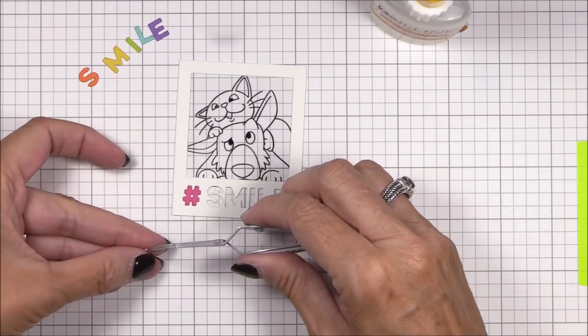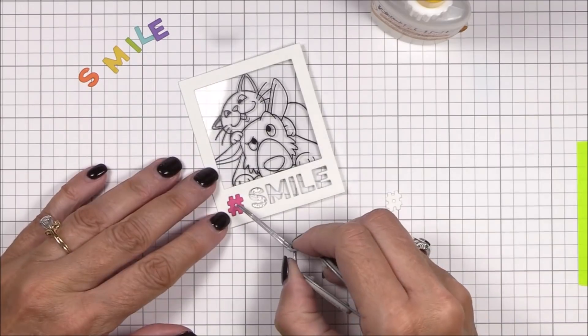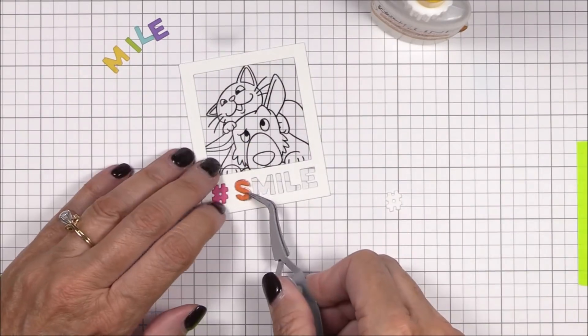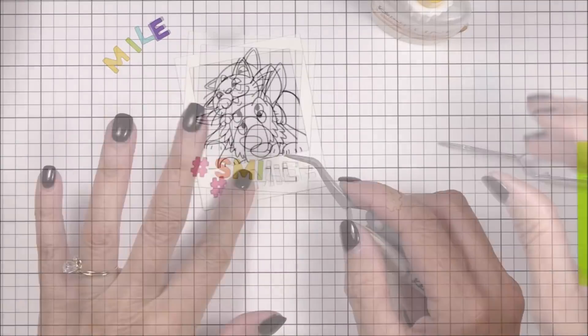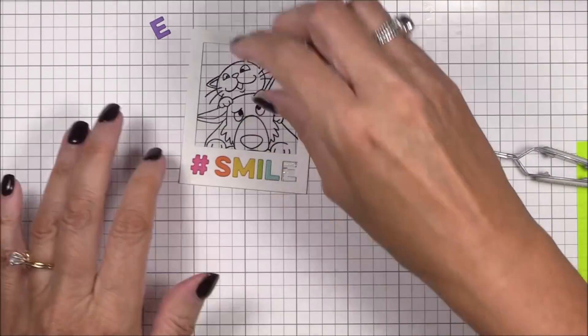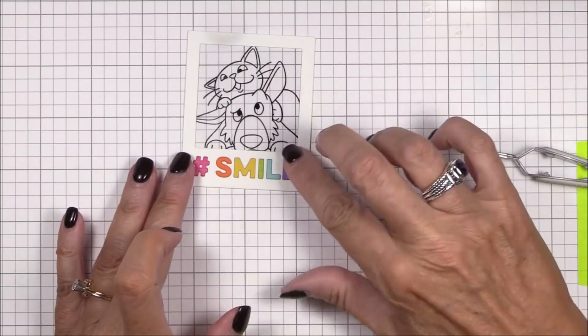I die cut the smile dynamics from some razzleberry, orange zest, lemon drop, limelight, summer splash, and grape jelly cardstocks and I'm adhering them to the acetate with some quick drying liquid adhesive.